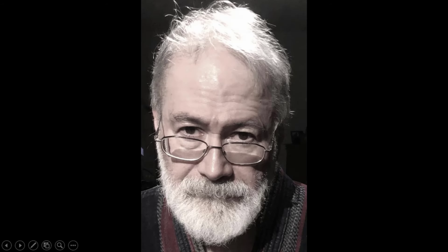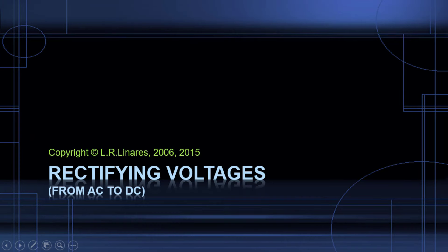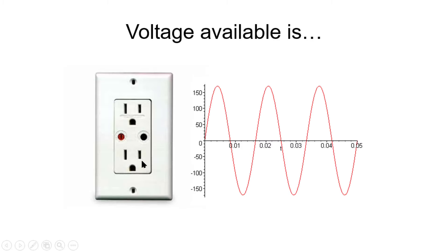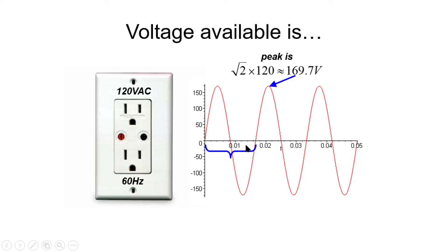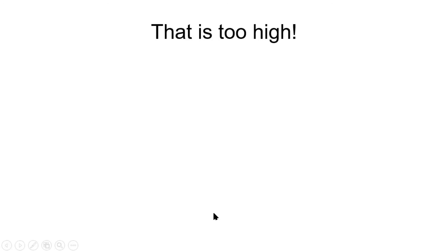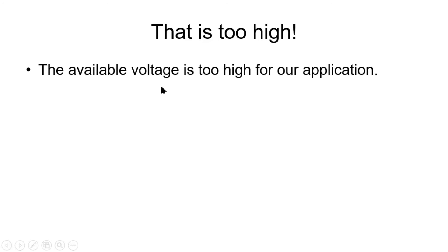Hello and welcome back to our series on electrical engineering. Tonight our conversation is about rectifying voltages — going from AC to DC. In our society, voltage is available in AC format from the power outlet on the wall. We get in Canada a sinusoidal voltage with an RMS value of 120 volts, which translates into a peak voltage of almost 170 volts and a frequency of 60 Hz. We want to harness that AC power and convert it to the DC power that our electronic devices need.